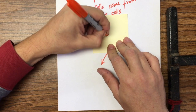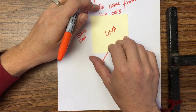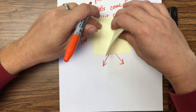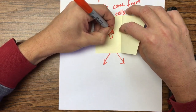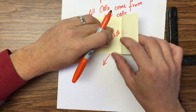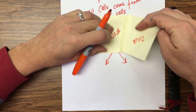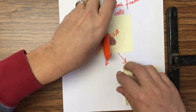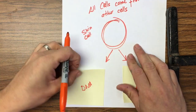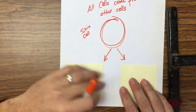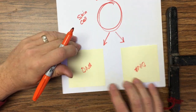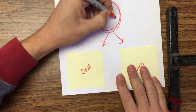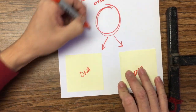The cell is going to have DNA, and it's going to copy its DNA. Now the cell is kind of double its size, and then it splits — it divides.